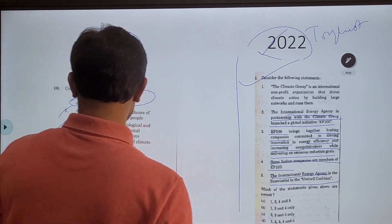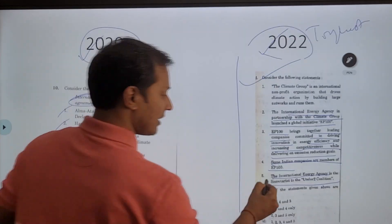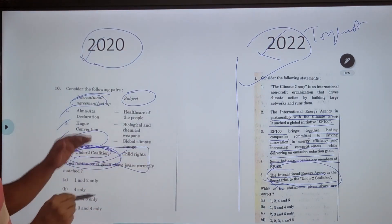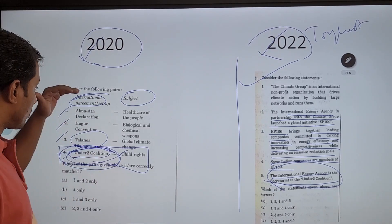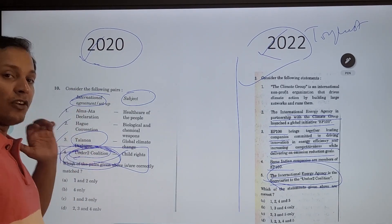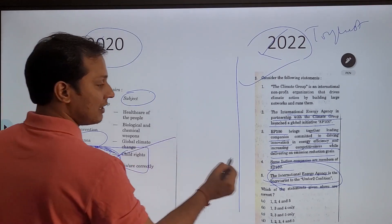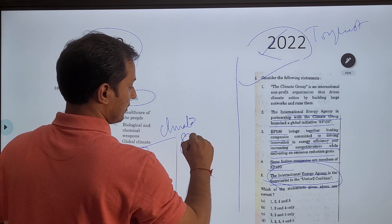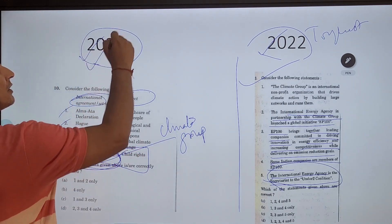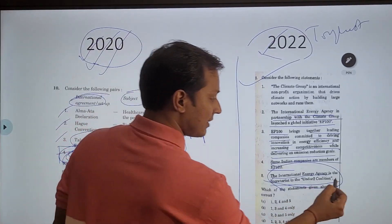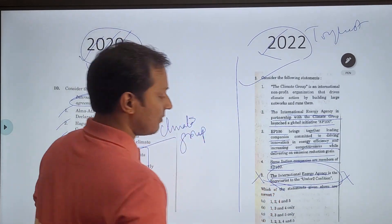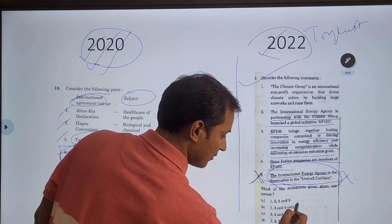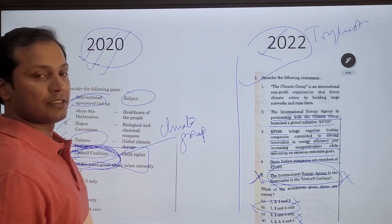You can see Under 2 Coalition referenced here. If you had solved the 2020 question and really understood each and every word about each international organization, you would know that the Secretariat of Under 2 Coalition is basically the Climate Group. If you had read about Under 2 Coalition while solving the 2020 paper, you can easily eliminate Statement 4, because Statement 4 says IEA is the secretariat of Under 2 Coalition — which is wrong. Once you eliminate Statement 4, the answer will be statements 1, 3, and 4 — sorry, 1, 2, and 3.